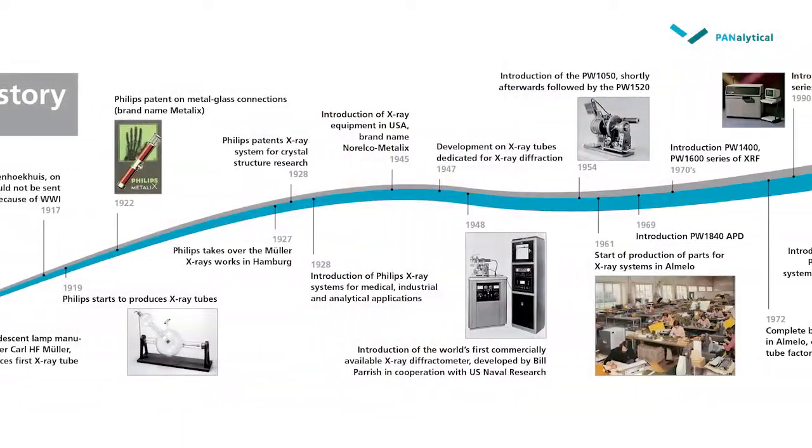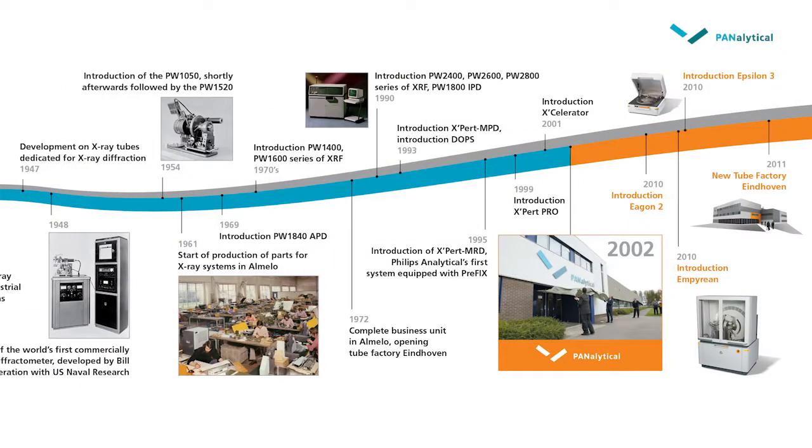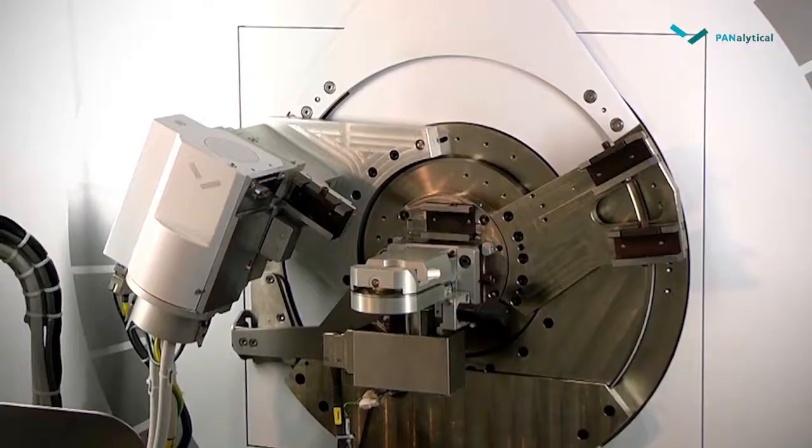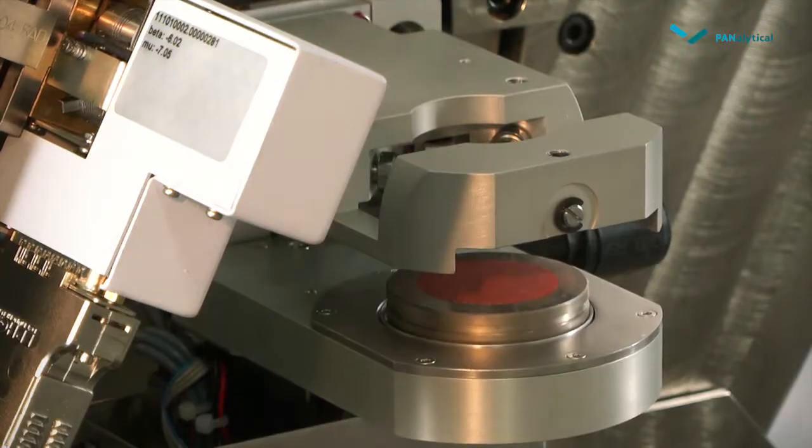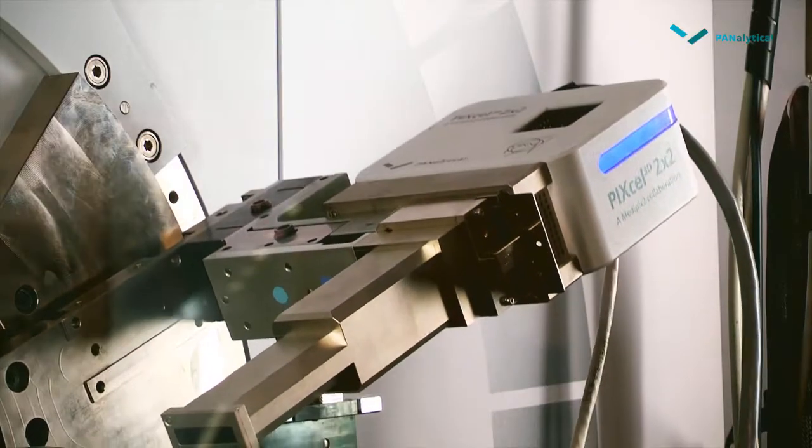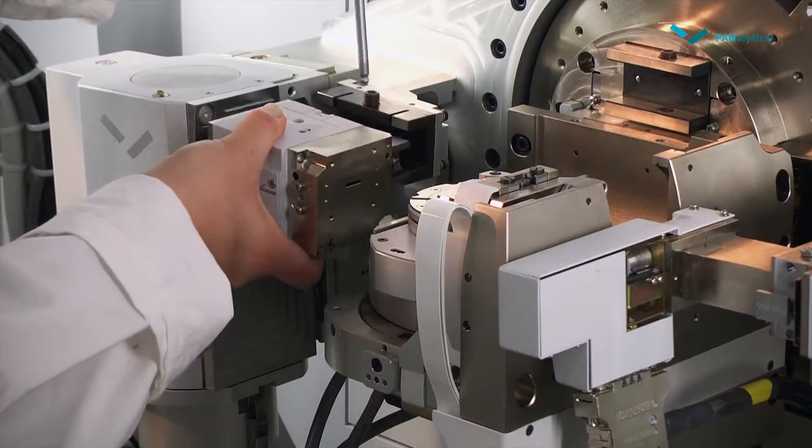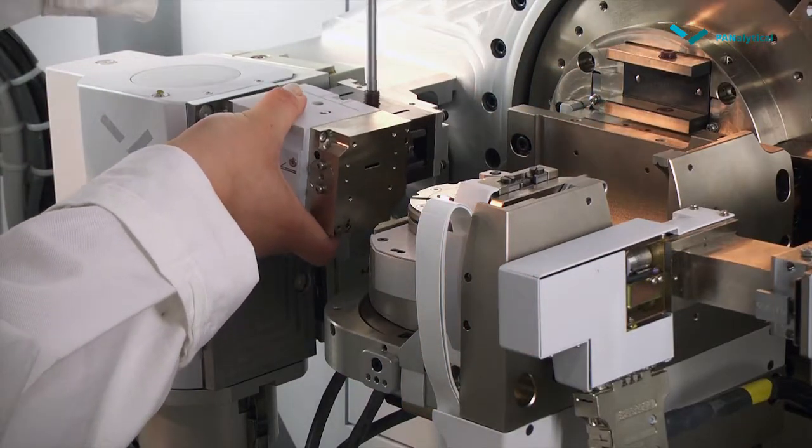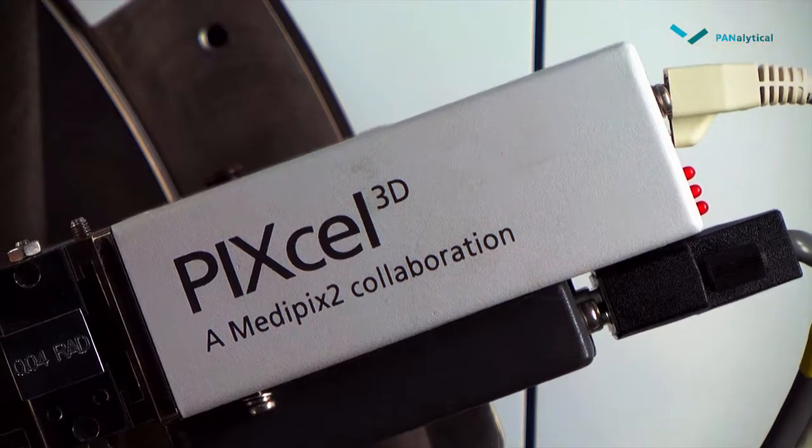The Empyrean is the newest diffractometer in Panalytical's 60 years history. The X-ray source, the goniometer, the sample stages and the detection system are all brand new designs. Each year, new optics and detectors are added to the portfolio of configurations available on this instrument.